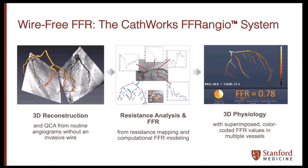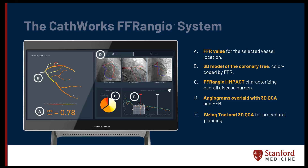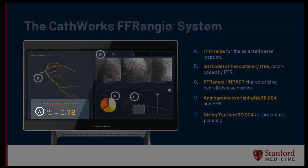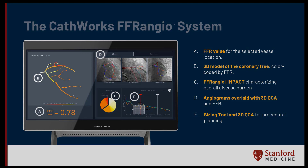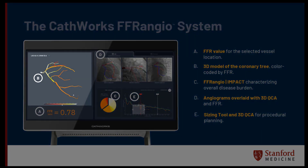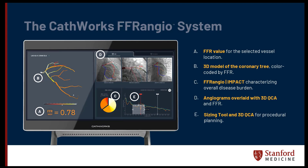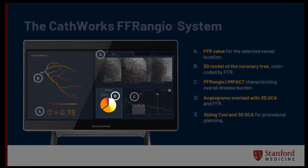Looking at the interface, at the end of your analysis the first and most important output is the FFR value, which straight away tells you whether it's clinically significant or insignificant. Second, you get a 3D model of the coronary tree color-coded by FFR, which quickly draws the eye to the area of the lesion — particularly useful for long diffuse lesions. It also gives you an idea of multiple lesions in parallel, in series, or in side branches that may also need to be treated.